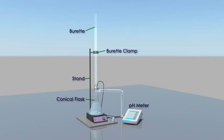You can use an experiment like this one to determine the pH at which the buffer is most effective. In the experimental setup that you see here, the buffer is inside of the conical flask.